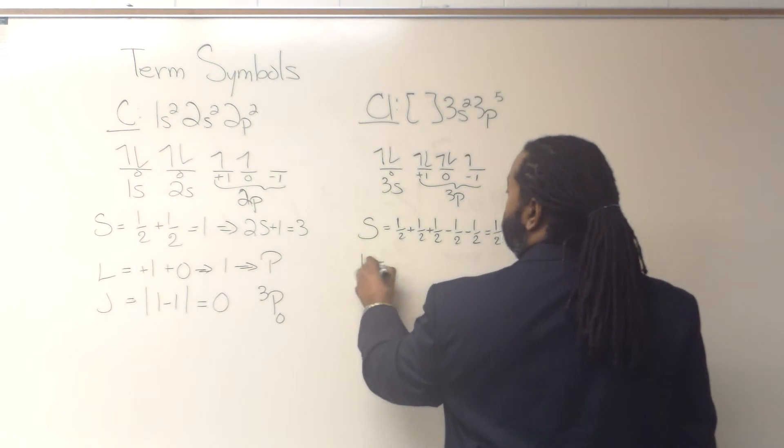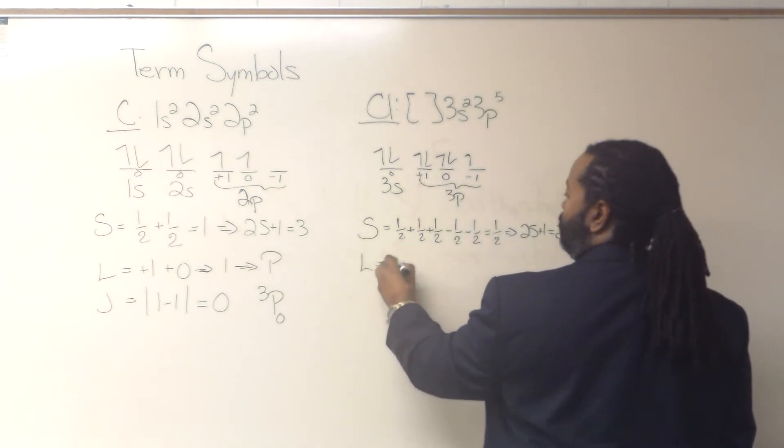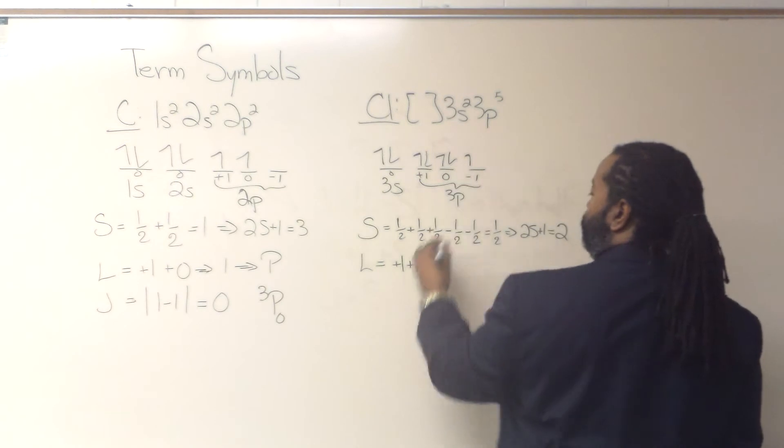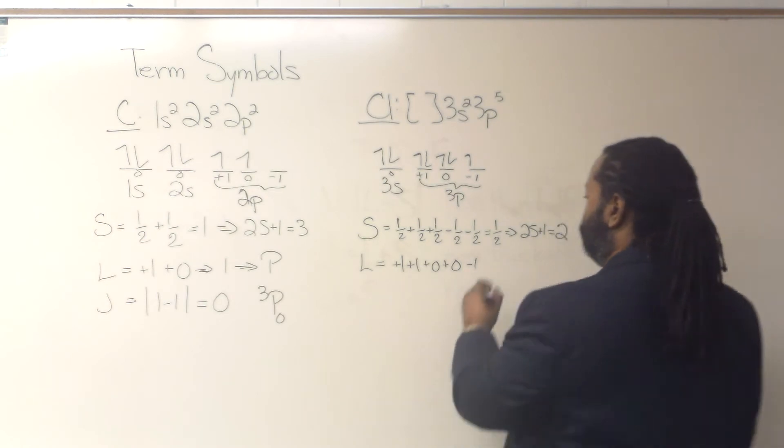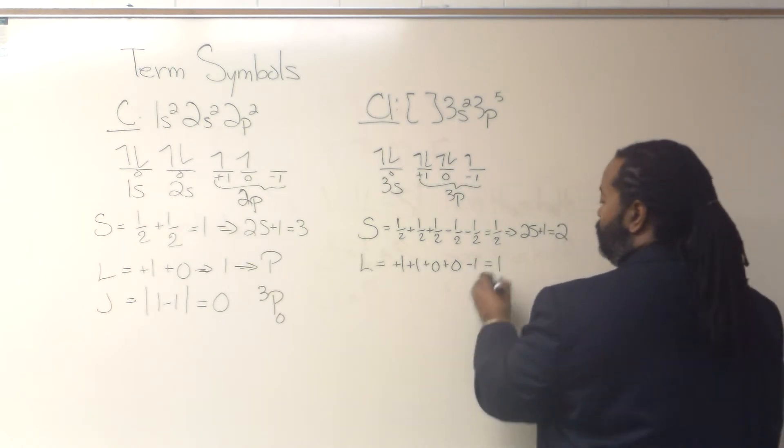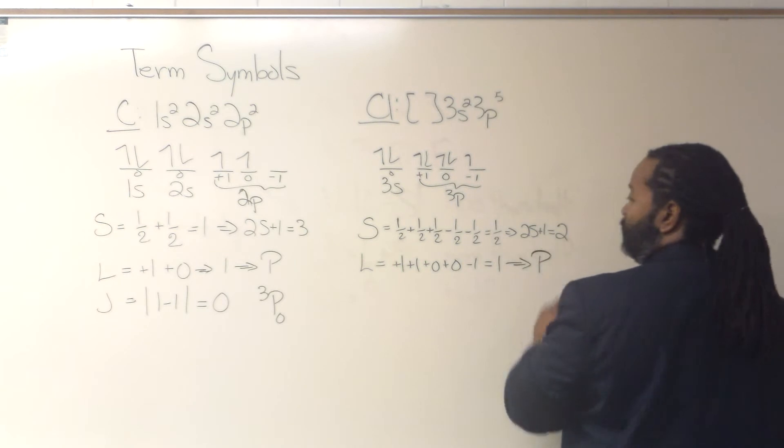For our l, we have plus 1 plus 1, plus 0 plus 0, and minus 1. So these two will cancel, leaving me with just a 1. And that's going to give me a P as well.